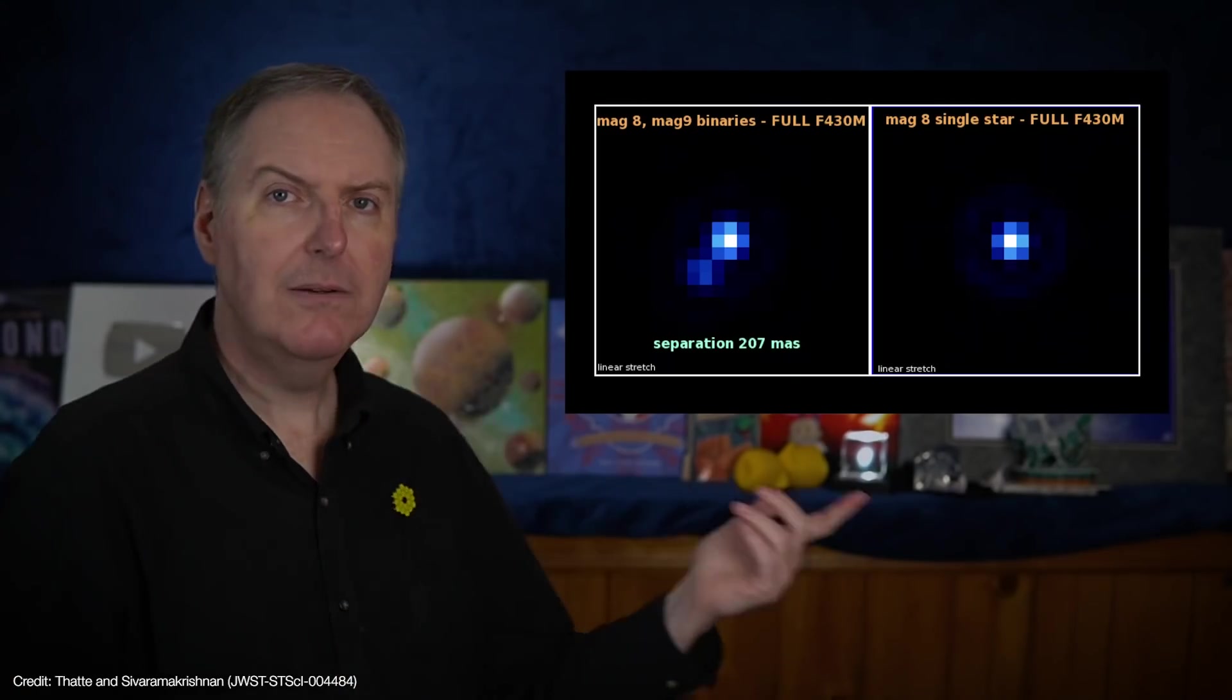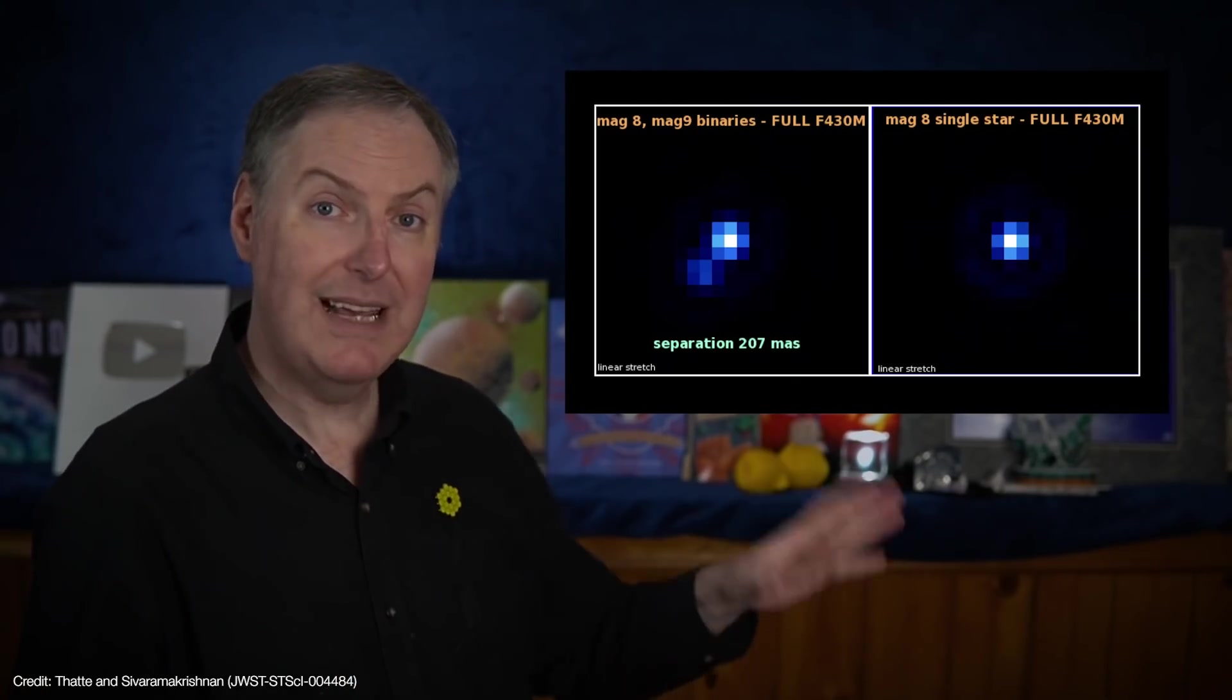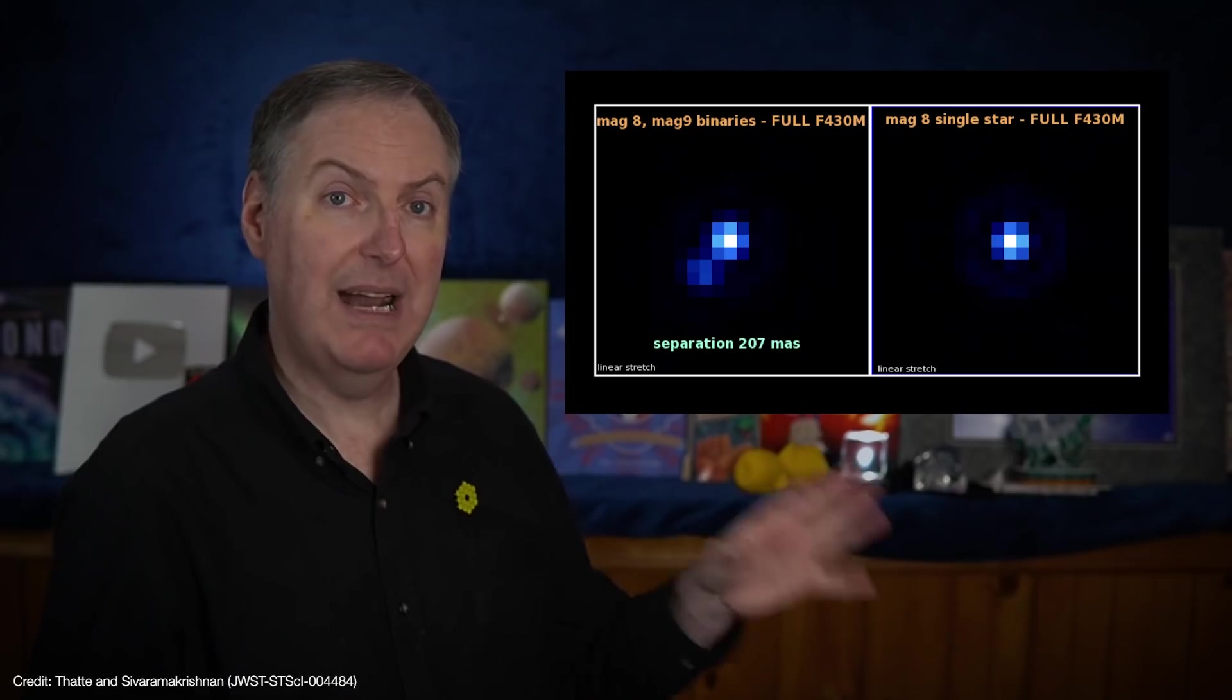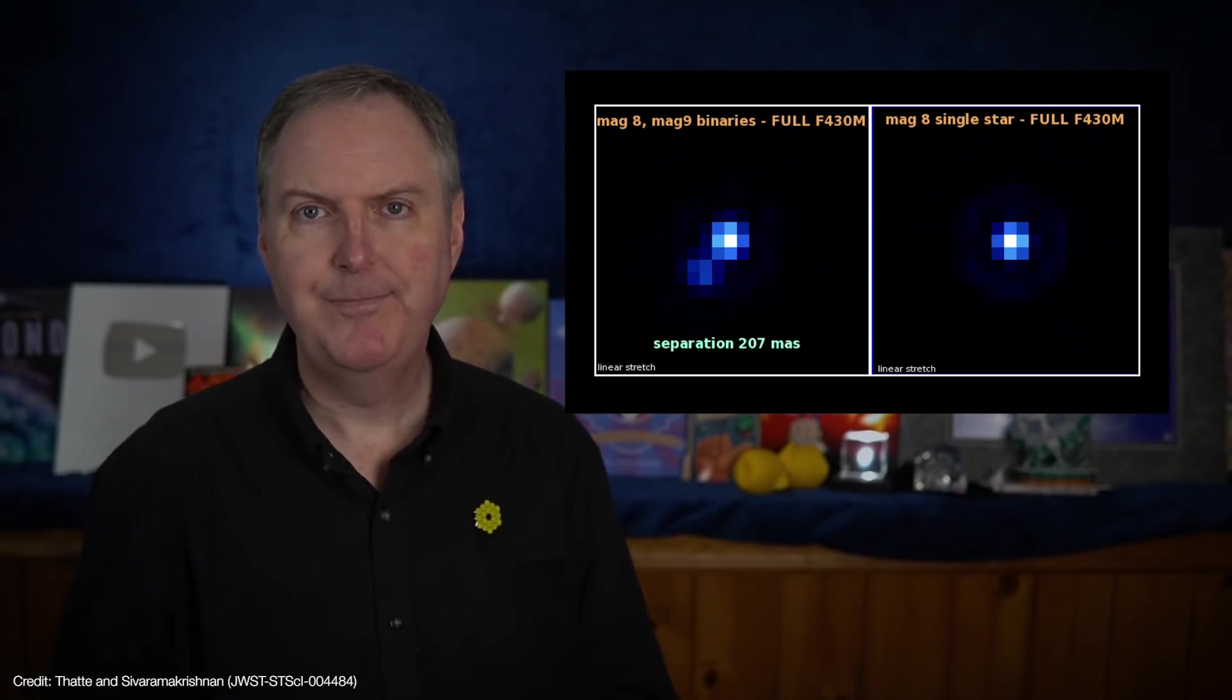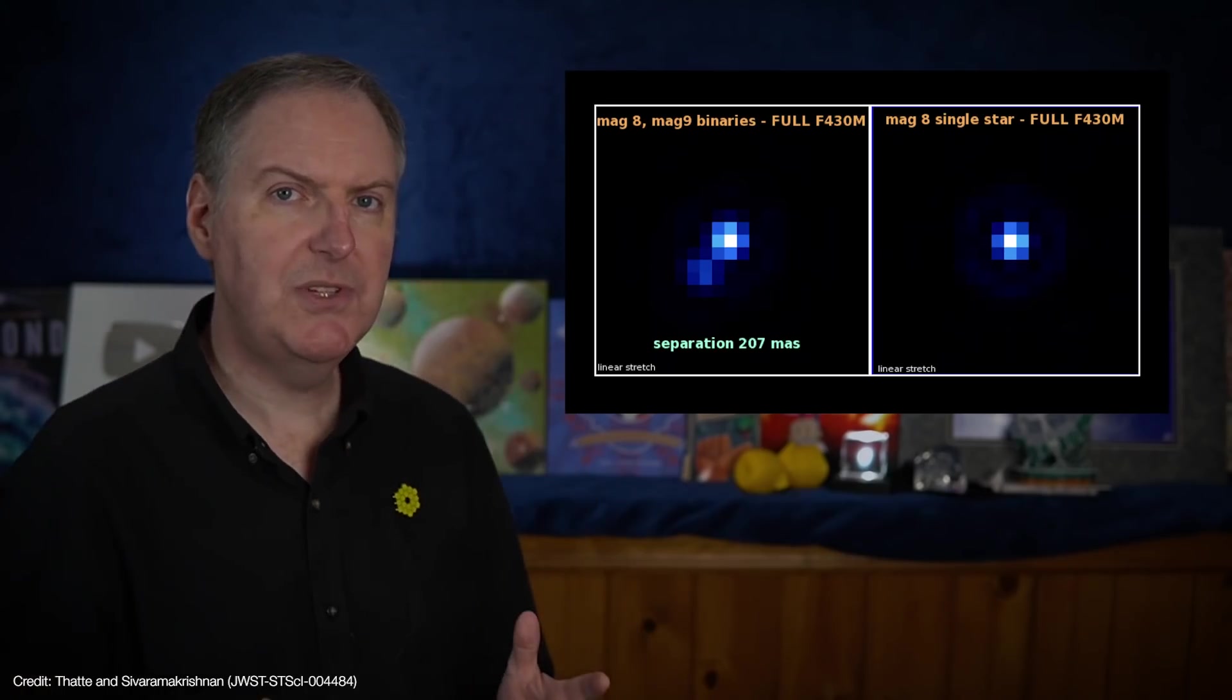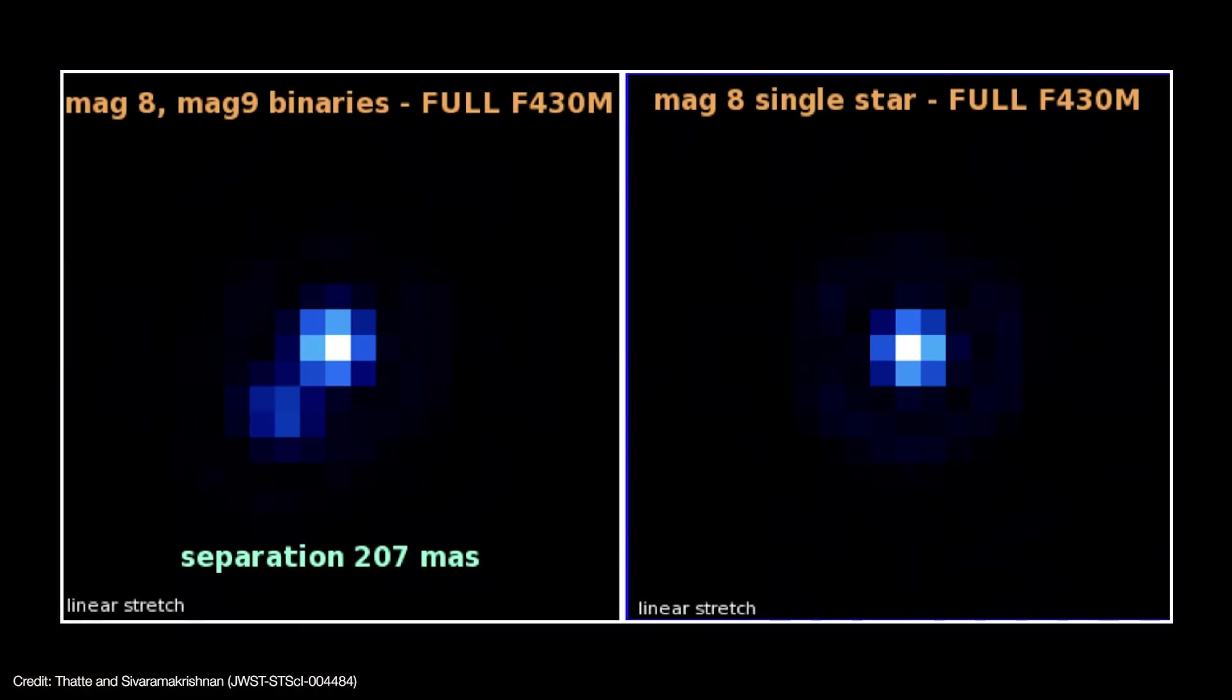For example, here are simulated NIRISS images of two stars. On the left is what is almost likely a binary star system, and on the right is a single reference star. The binary system is too close together to be resolved. They're separated by just 207 thousandths of an arc second. At this scale, both stars in the system are just blocks of pixels.